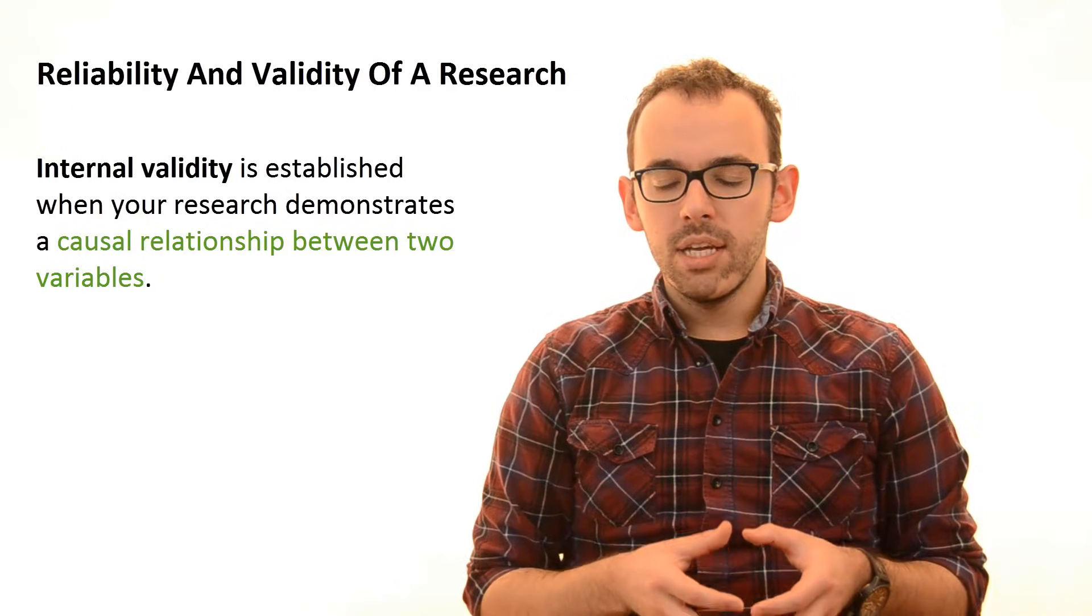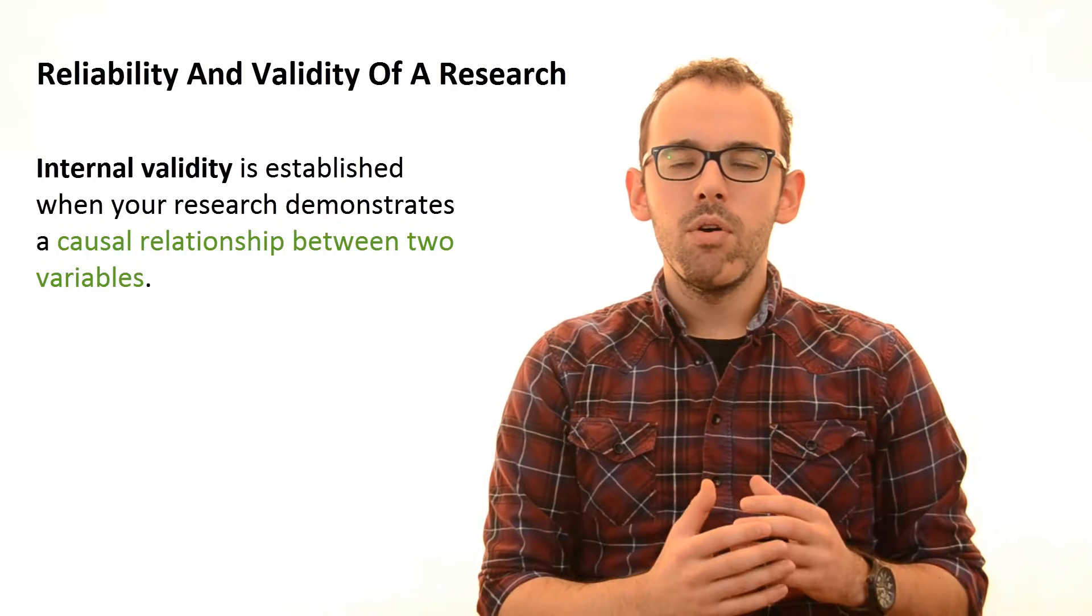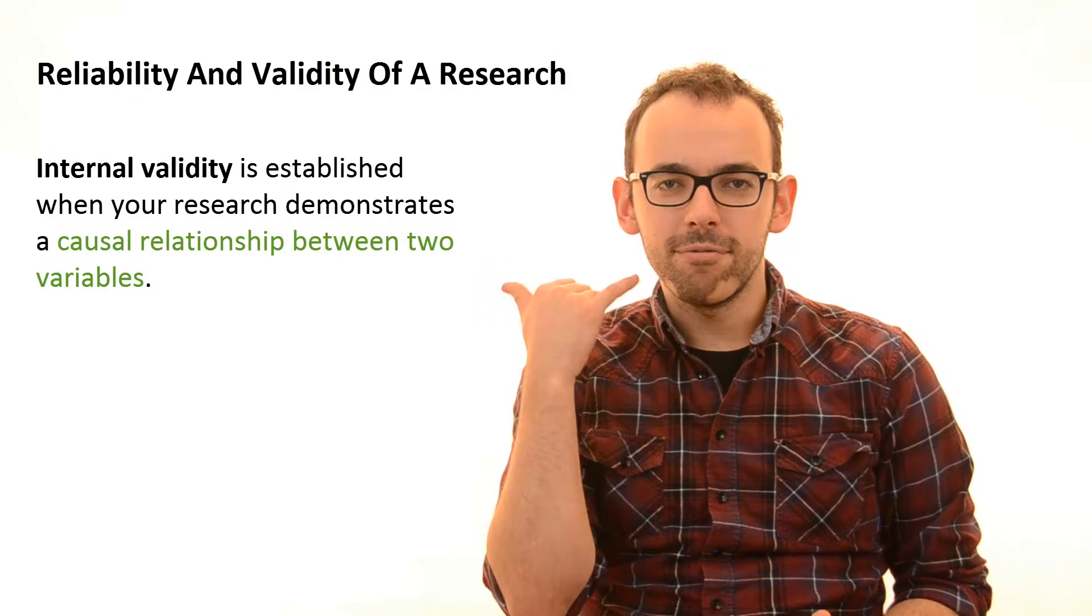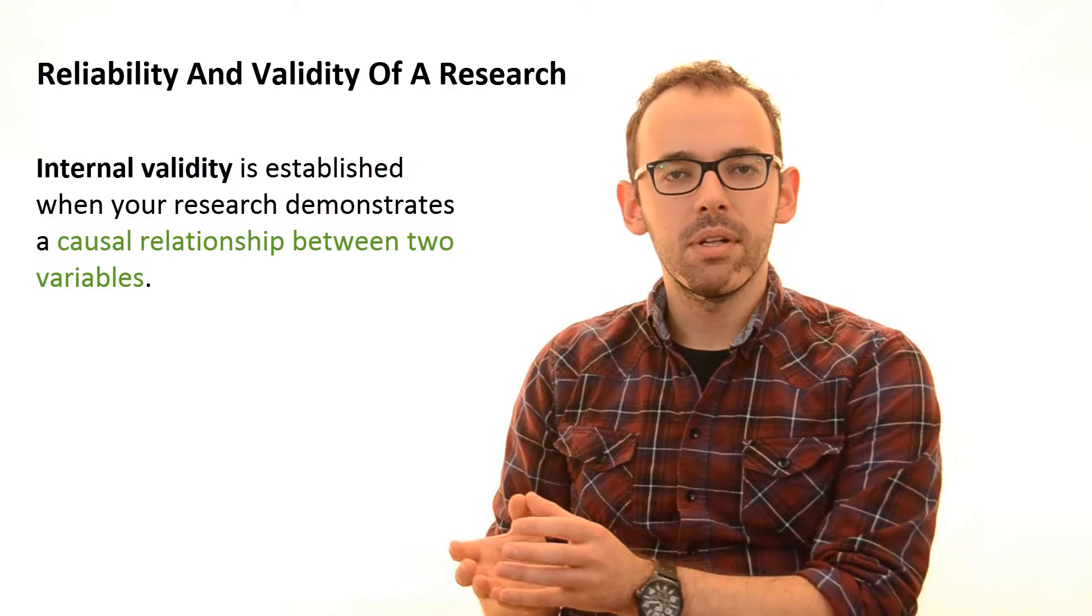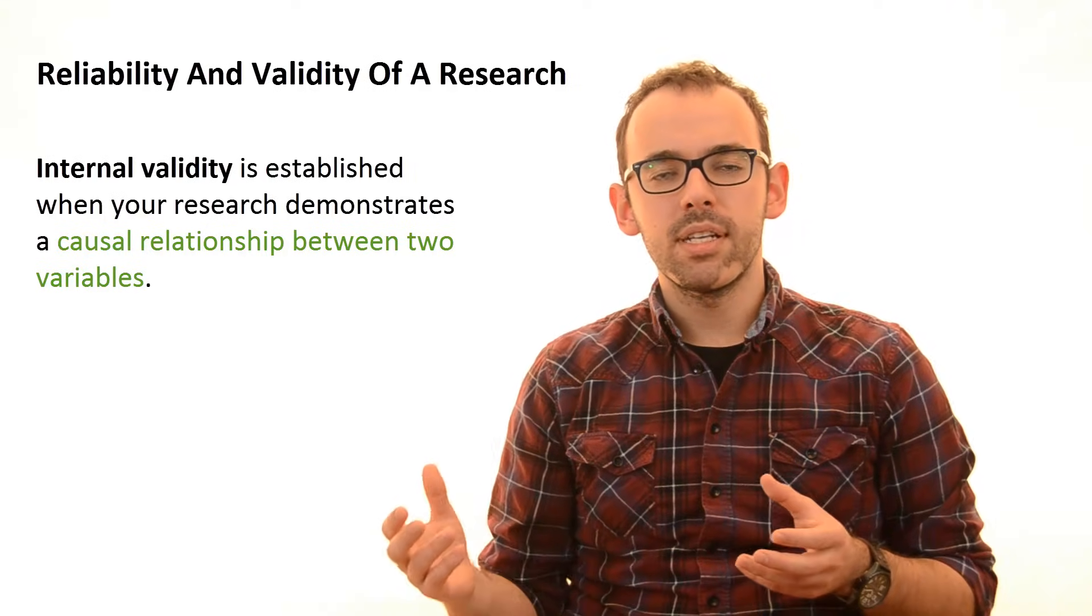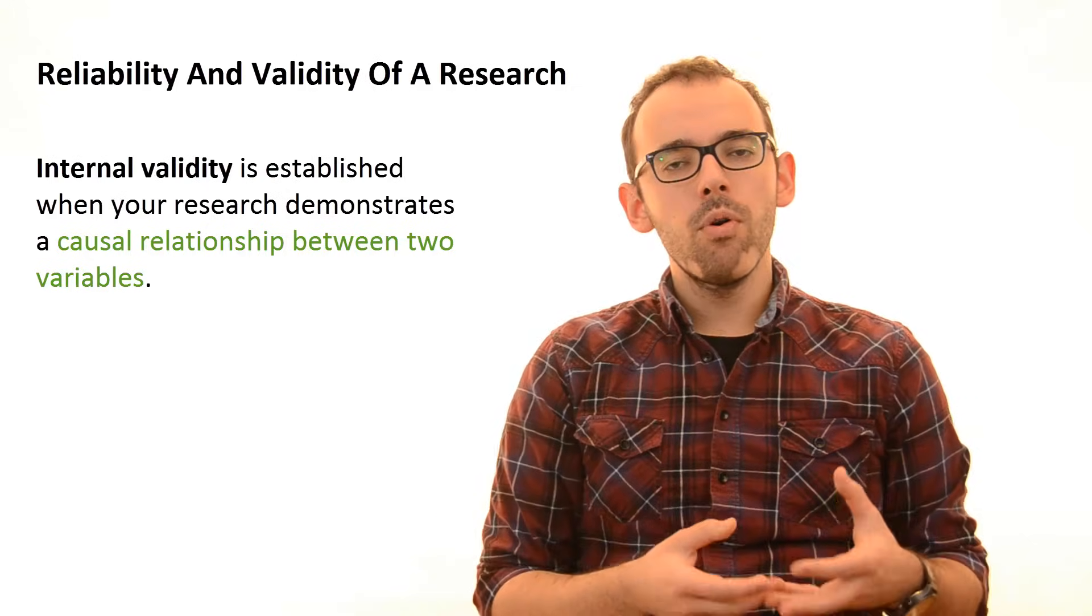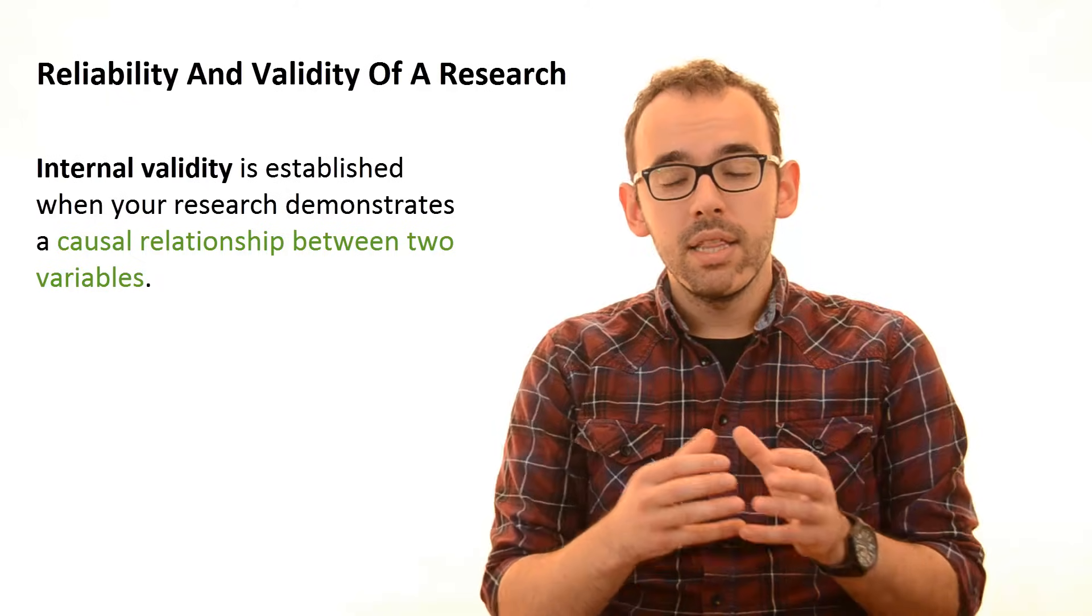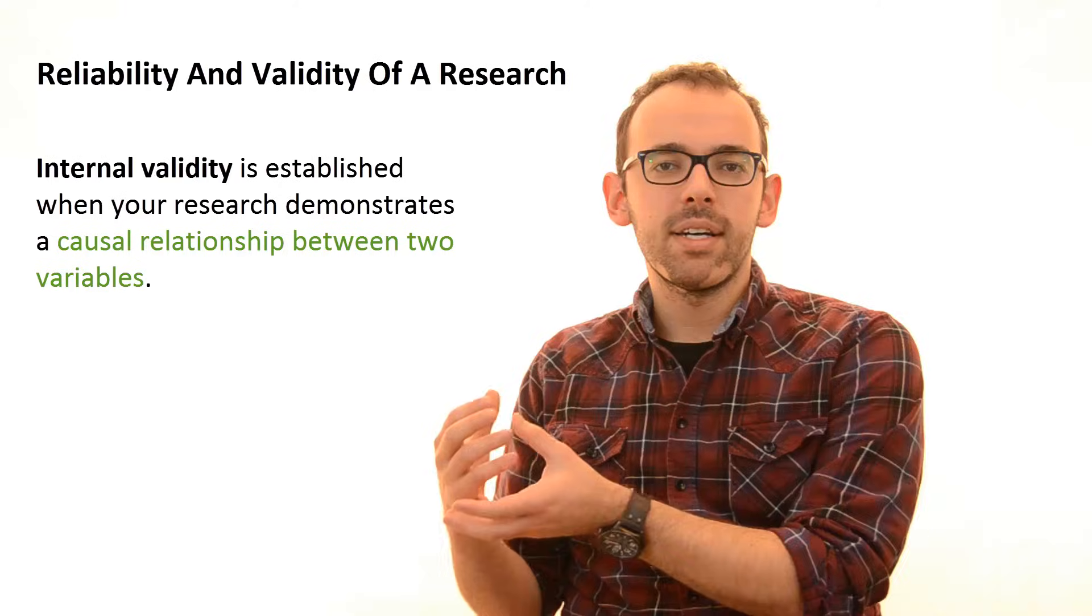So let's say that we choose as an independent variable the educational level of our customer support - these guys who are answering the phone when the customer has a problem. And as a dependent variable, we select customer satisfaction level. So our assumption is that the more educated the support employees will be, then the happier the customers will be and the more satisfied they will be.